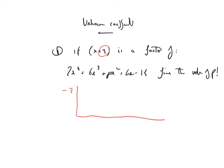If x plus 3 is a factor of 2x to the power of 4 plus 6x cubed plus px squared plus 4x minus 15, find the value of p. Okay, so first of all, x plus 3 is a factor, that means minus 3 goes up at the side.